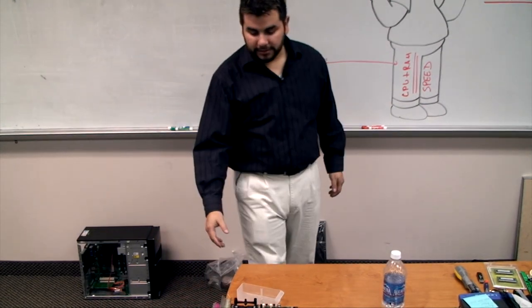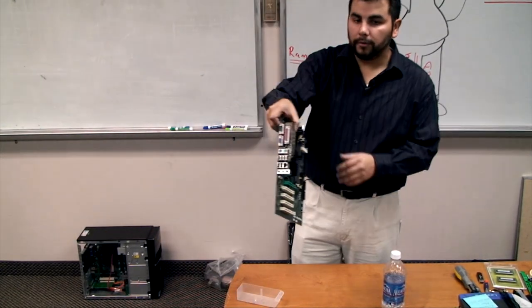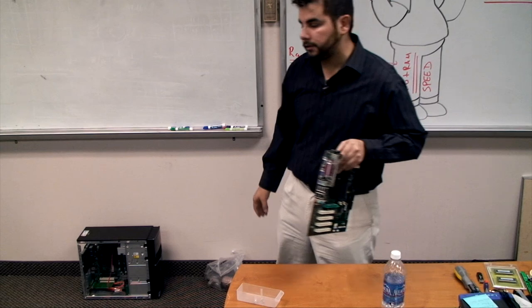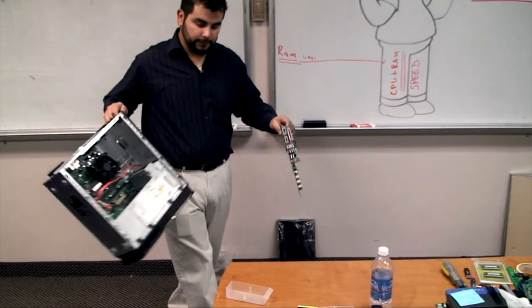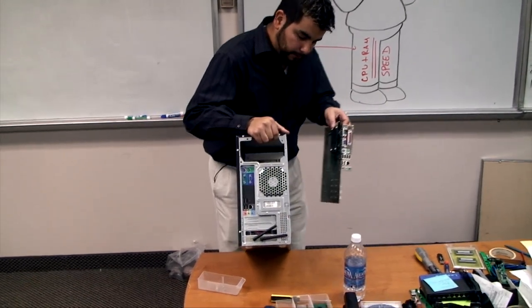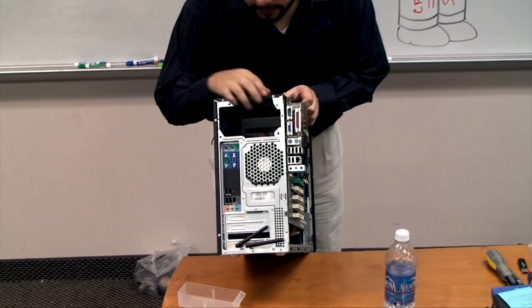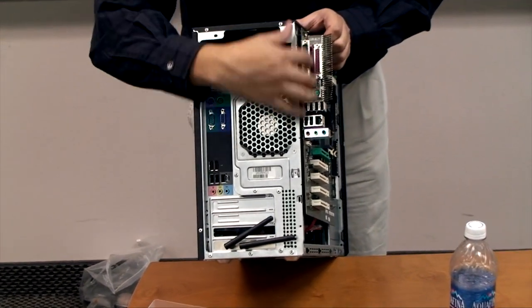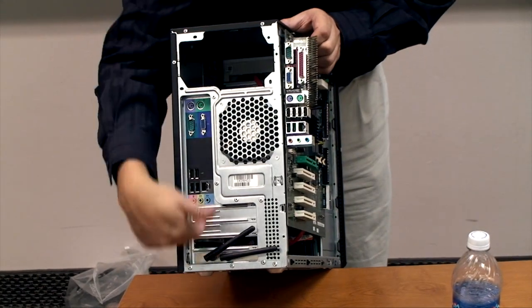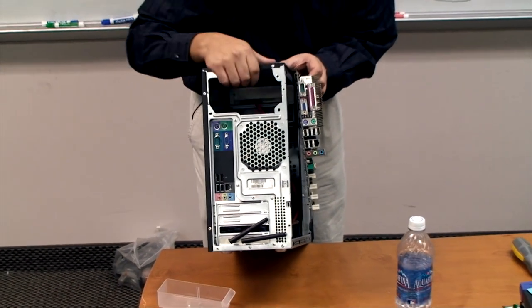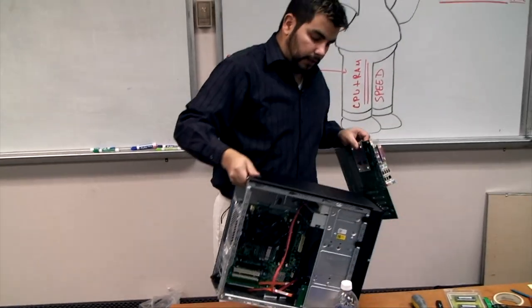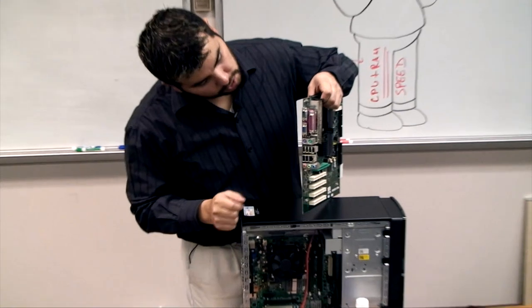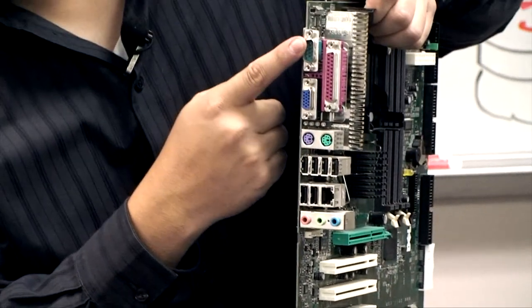All right, notice those are actually on the motherboard. All the ports on the motherboard are actually called onboard ports. And whenever you put this motherboard in, that's why you have some up here and then different ones down here. So these are called onboard ports.